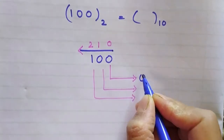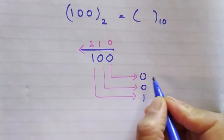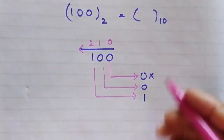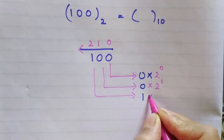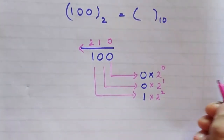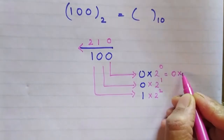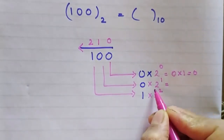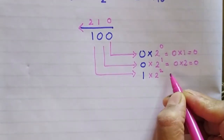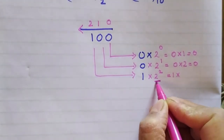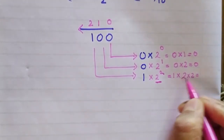First of all I will copy the bits as they are: 0, 0, 1. Now this 0 will be multiplied by 2 raised to the power 0, this will be multiplied by 2 raised to the power 1. As you must know, any number raised to the power 0 is 1, so this will be 0 into 1, that is 0. Any number raised to the power 1 is the number itself, so 0 into 2 is 0. And 1 into 2 raised to the power 2 means 2 into 2, so your value for this multiplication will be 4.